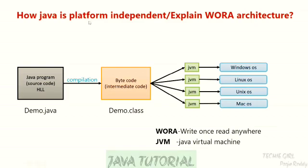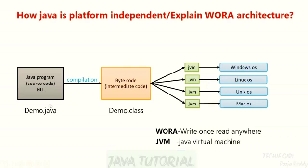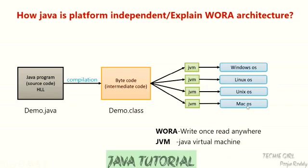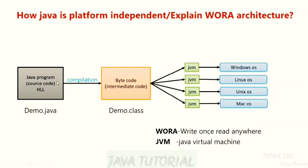Hence it is called a platform independent programming language, because here you are writing a Java program and running it on all the operating systems without changing any line of the code. Hence it is a platform independent programming language. For example, we can write a Java program on a Windows operating system.